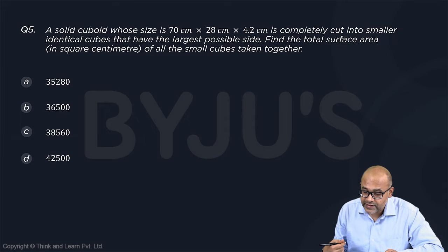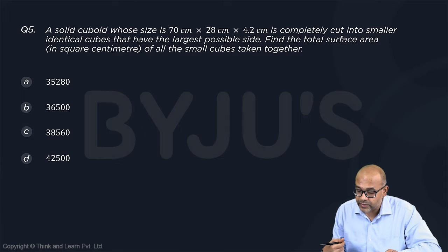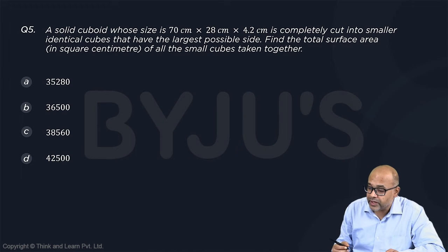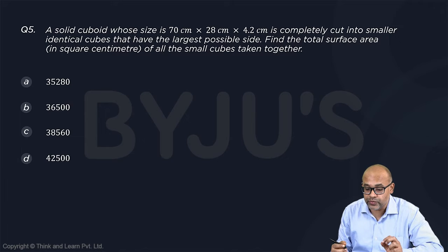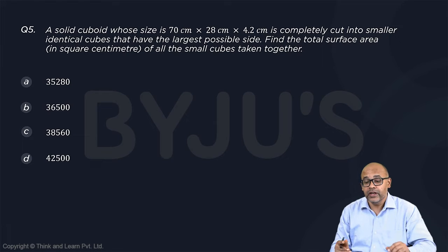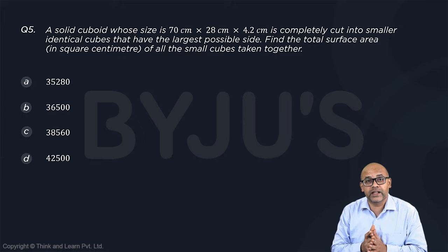A solid cuboid whose size is 70 centimeters into 28 centimeters into 4.2 centimeters is completely cut into smaller identical cubes that have the largest possible side. So you have to first look at what could be the largest possible side cut.